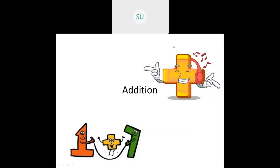First of all let's see what is addition - what is the meaning of addition? For example, if I say I have 2 apples and you have 3 apples, and I want to find how many apples both of us have together. My 2 apples and your 3 apples together - we will count how many apples there are.